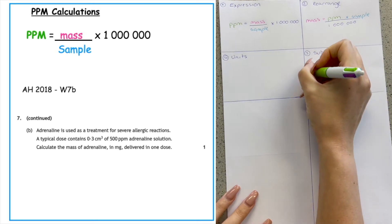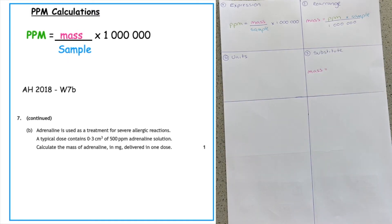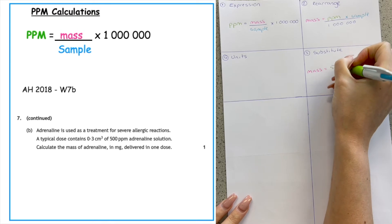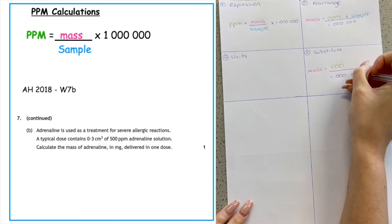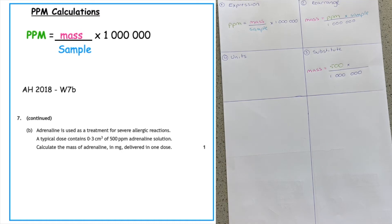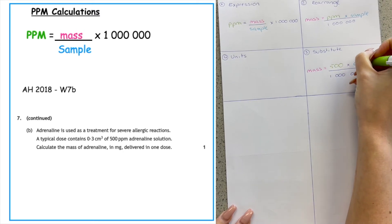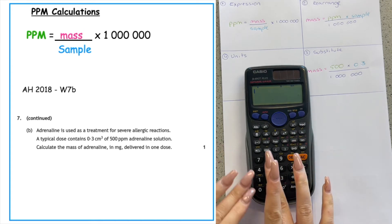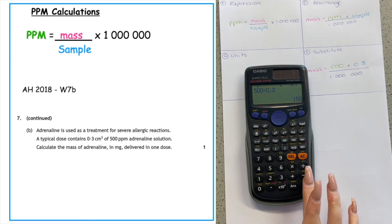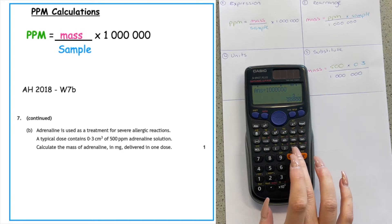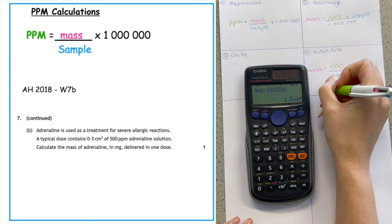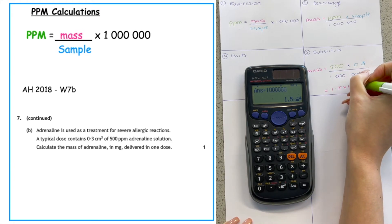Next we substitute the values. We don't know the mass. From the question we're given 500 parts per million, so 500 goes in there, all over one million — which is a constant. We need to multiply by the sample. The sample given is a typical dose and it's a volume — 0.3 centimetres cubed — so we don't need a unit conversion. Putting that into the calculator: 500 times 0.3 equals 150, divided by one million, giving 1.5 times ten to the minus four grams.